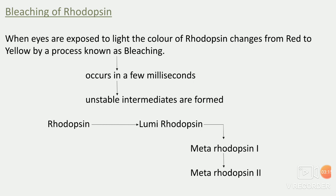Then we see what is bleaching of rhodopsin. When eyes are exposed to light, the color of rhodopsin changes from red to yellow by the process of bleaching. Bleaching क्या है: जब eyes light को exposed होंगी तो जो red color का rhodopsin है वो change हो जाएगा yellow color में — और इसको हम बुलाएंगे bleaching of rhodopsin.